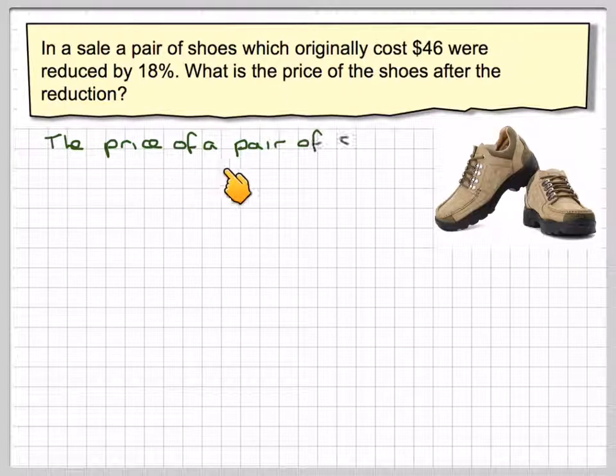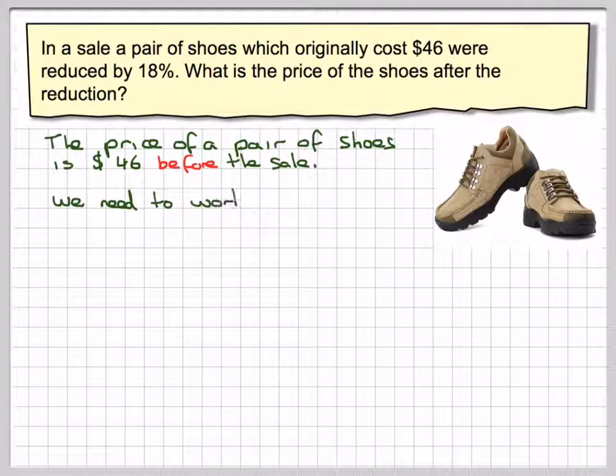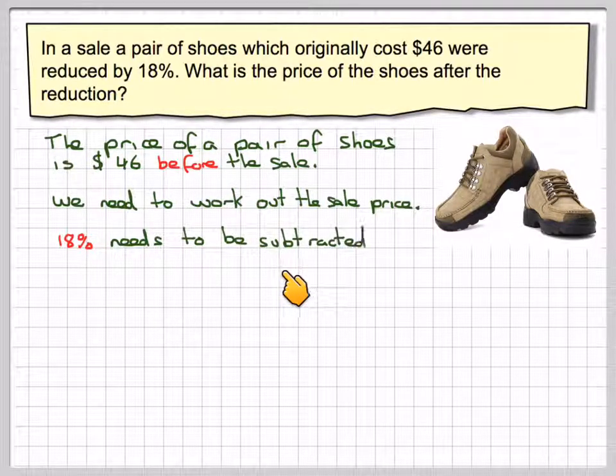The price of a pair of shoes is $46 before the sale. We need to work out the sale price. So 18% needs to be subtracted.